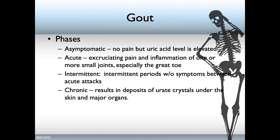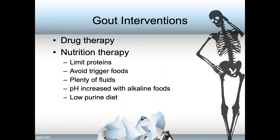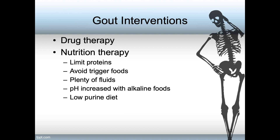There is the intermittent phase, in which there are intermittent periods of symptoms between the acute attacks. And there is the chronic phase, which results in the deposits of urate crystals under the skin and in the major organs. Interventions include drug therapy: NSAIDs and colchicine for acute gout, and for repeated acute episodes or chronic gout, the drugs of choice are allopurinol or febuxostat. The patient should be taught with both of these drugs to drink at least 8 glasses of water. Nutrition therapy includes limiting proteins, avoiding trigger foods, drinking plenty of fluids, increasing pH with alkaline foods, and following a low purine diet.